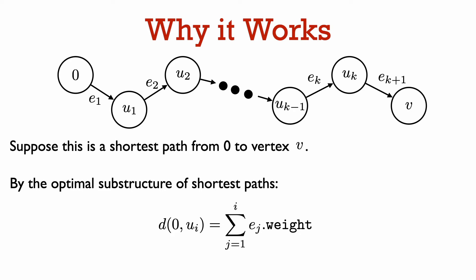Suppose that this is a shortest path from vertex 0 to vertex V. Then we know that the path given here from vertex 0 to vertex u_k must also be a shortest path from 0 to u_k. If there was a shorter path, we could take that route to get to u_k and then have a shorter path to V overall. So for each i, the distance from 0 to u_i is the sum from j equals 1 to i of the edge weight of e_j.